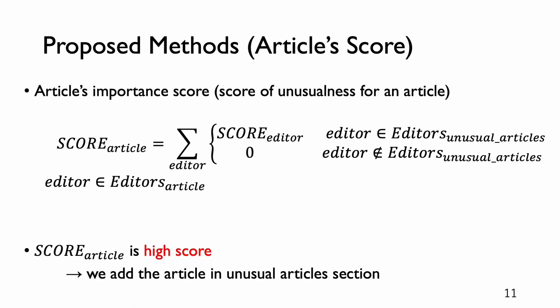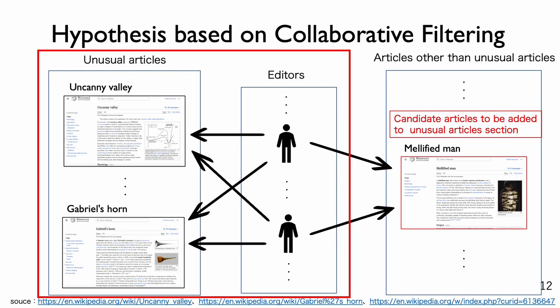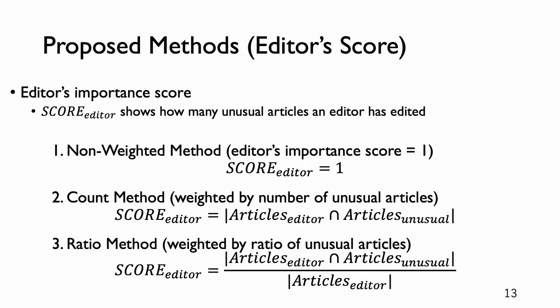The higher the article's importance score, the more likely it is to be a good article to add to the unusual articles section. The editor's importance score, score_editor, shows how many unusual articles an editor has edited. We devise three methods: non-weighted method, count method, and ratio method.